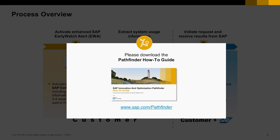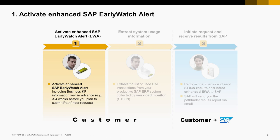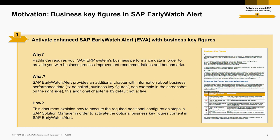Let's look into the first step: the activation of the Enhanced EWA. You may wonder, what is the Enhanced SAP Early Watch Alert actually all about? The Enhanced EWA provides an additional chapter with information about business performance data, or so-called business key figures. This additional chapter is by default not active and needs to be activated. Pathfinder requires exactly this information, as your ERP system's business performance data is the foundation for the business process improvement recommendations and benchmarks.